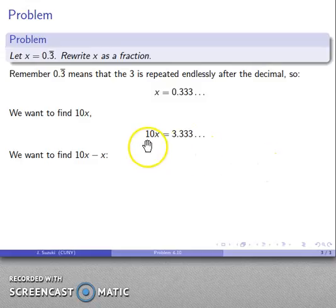Well, what happens if I go 10x minus x? Well, let's think about that. I have 10 of something. I subtract one of the somethings. So that leaves me with 10x minus x.